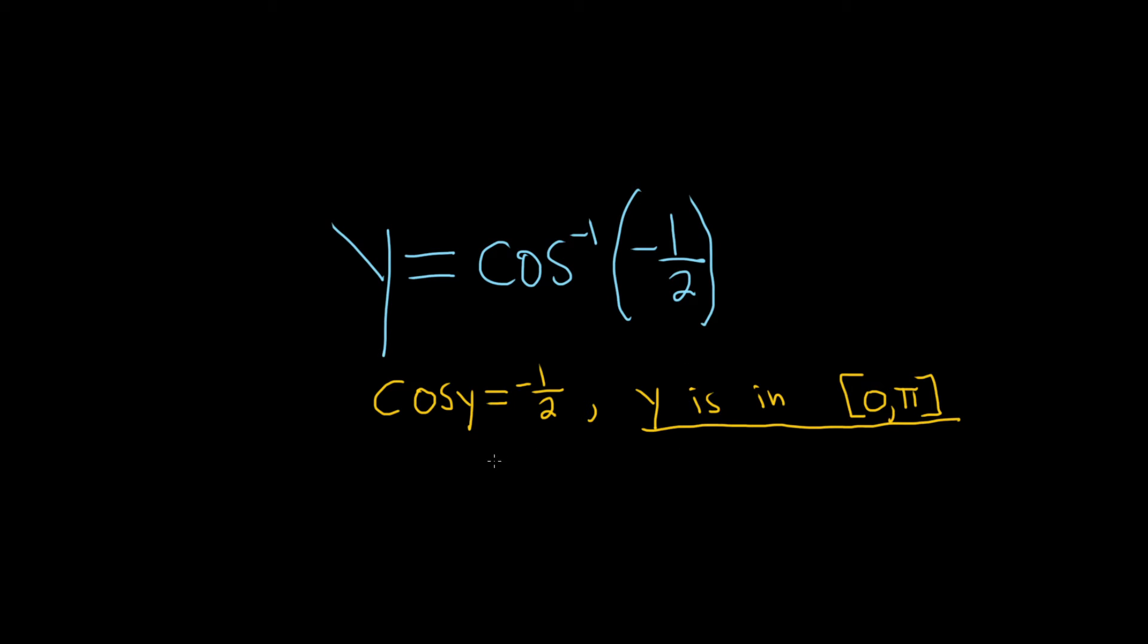So now we have to use basic trig knowledge to figure out what this is. When I think of 1 half, I know from memory that the cosine of π over 3 is equal to 1 half. So now I know that I have to find an angle on the unit circle that has a reference angle of π over 3.